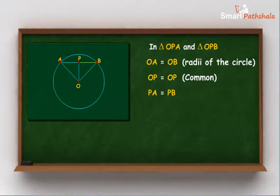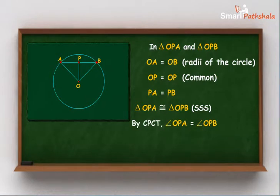Thus, triangle OPA is congruent to triangle OPB by SSS congruence criteria. By CPCT we can say that OP is perpendicular to AB.